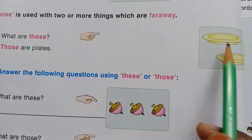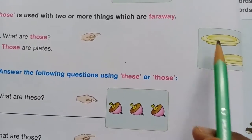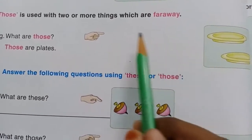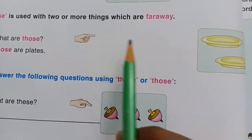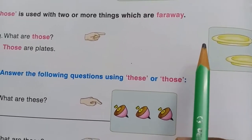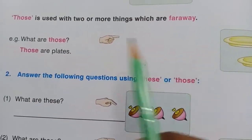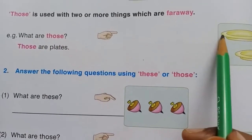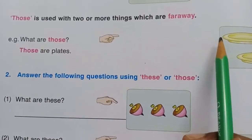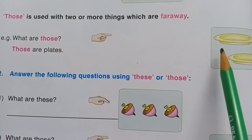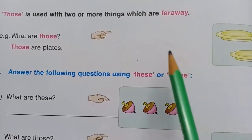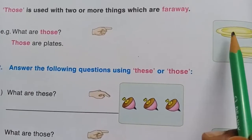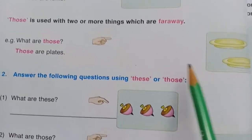You can see many plates — more than one. And also you can see the distance — far away. So what are those? Those are plates. More than one. Understood.